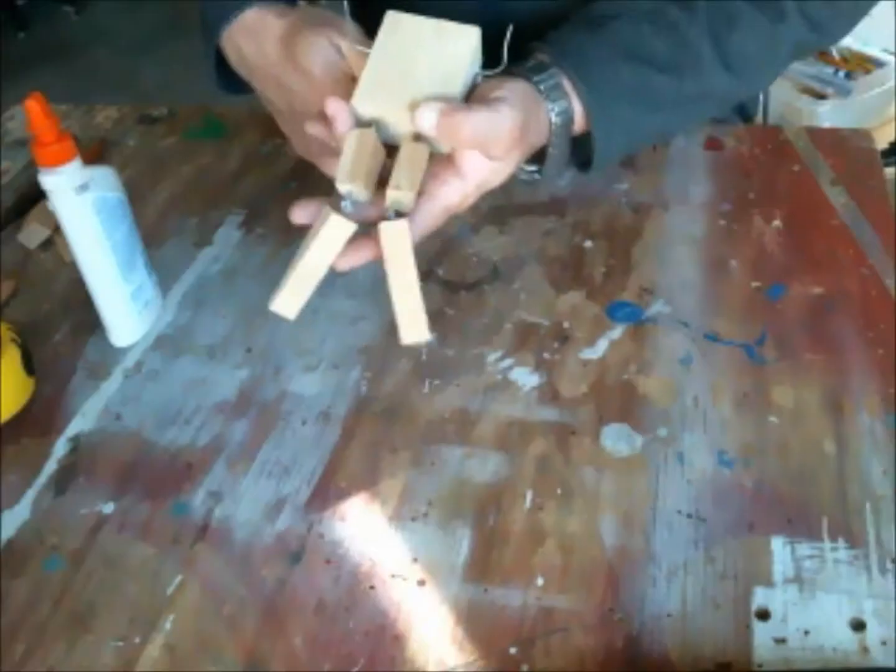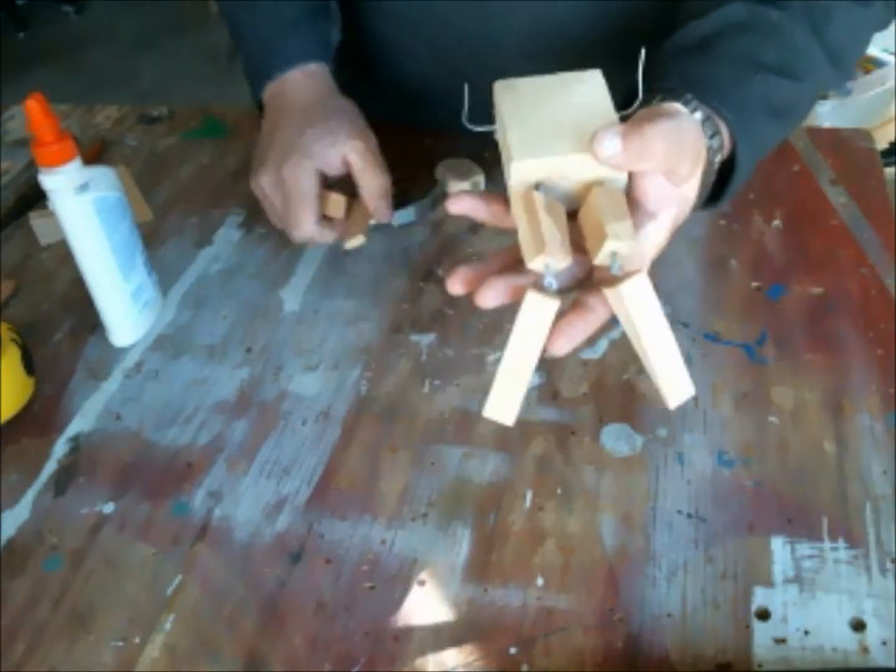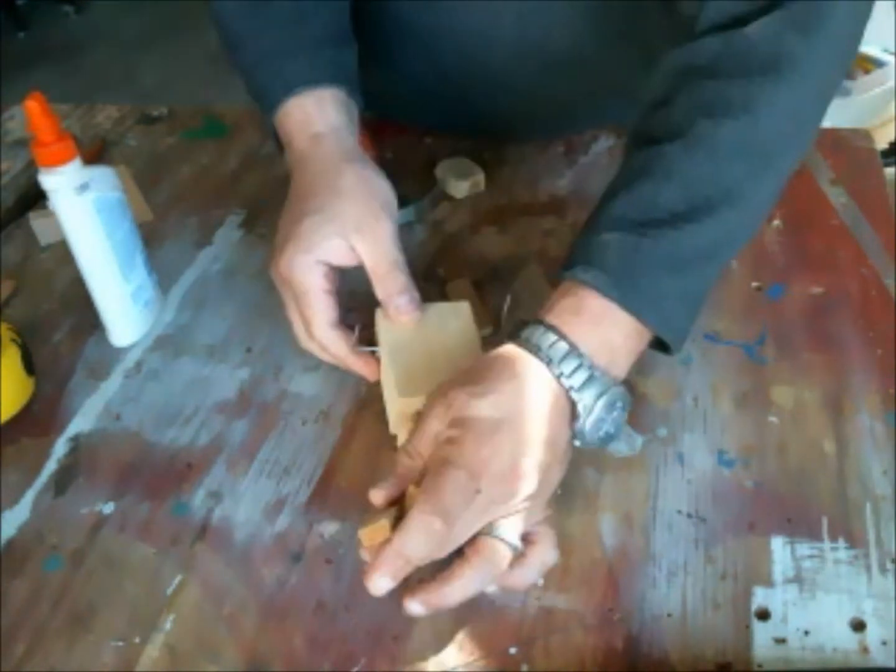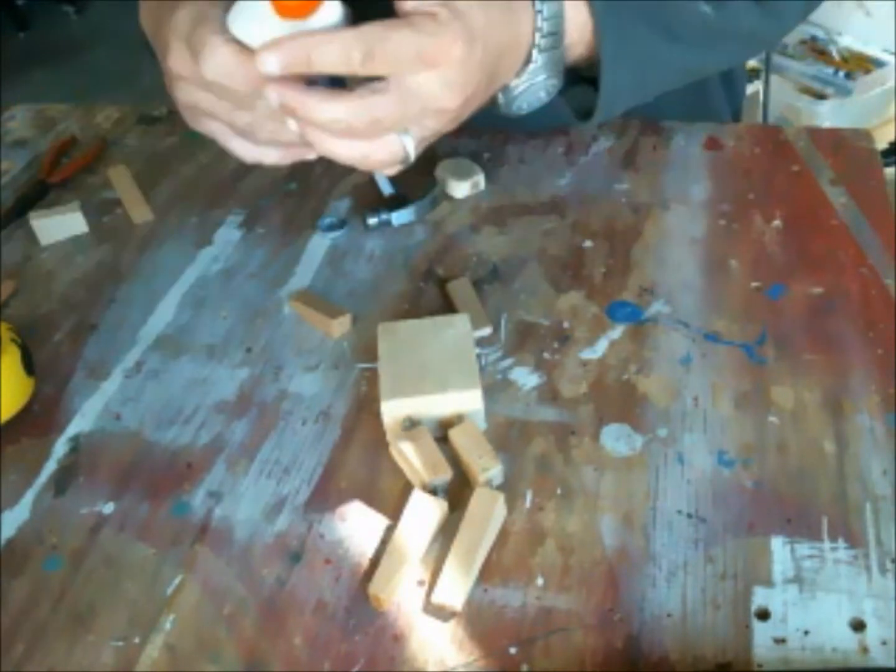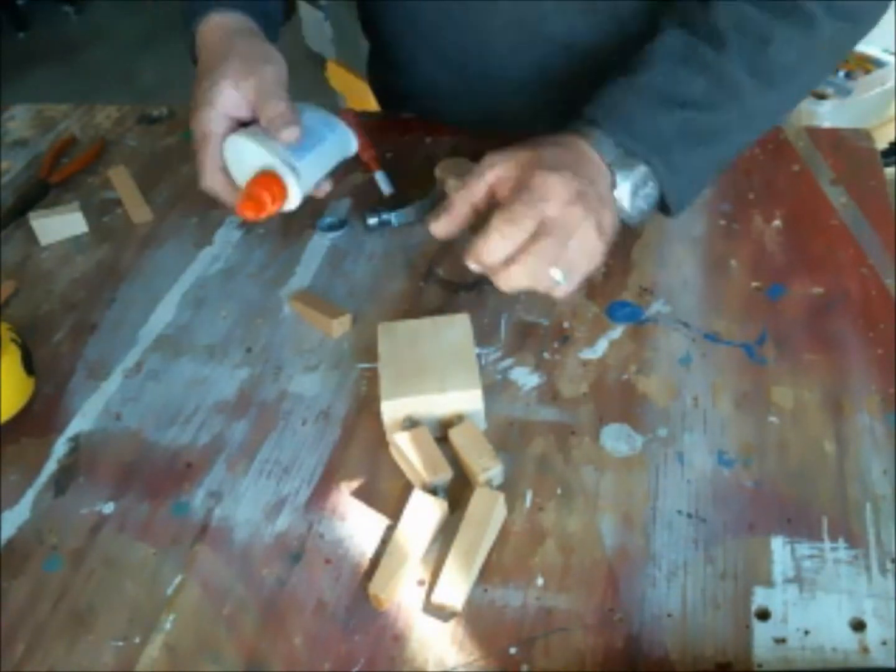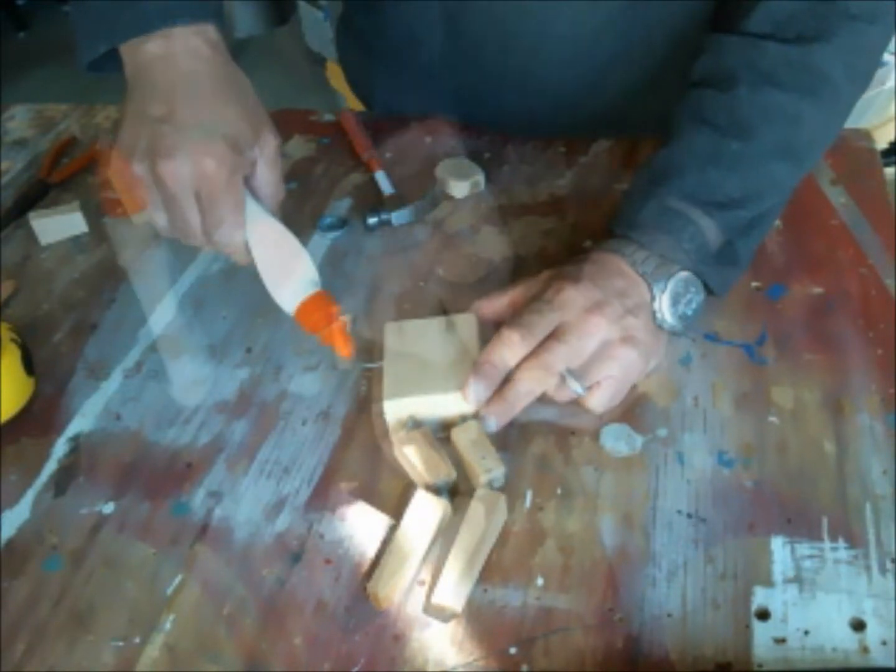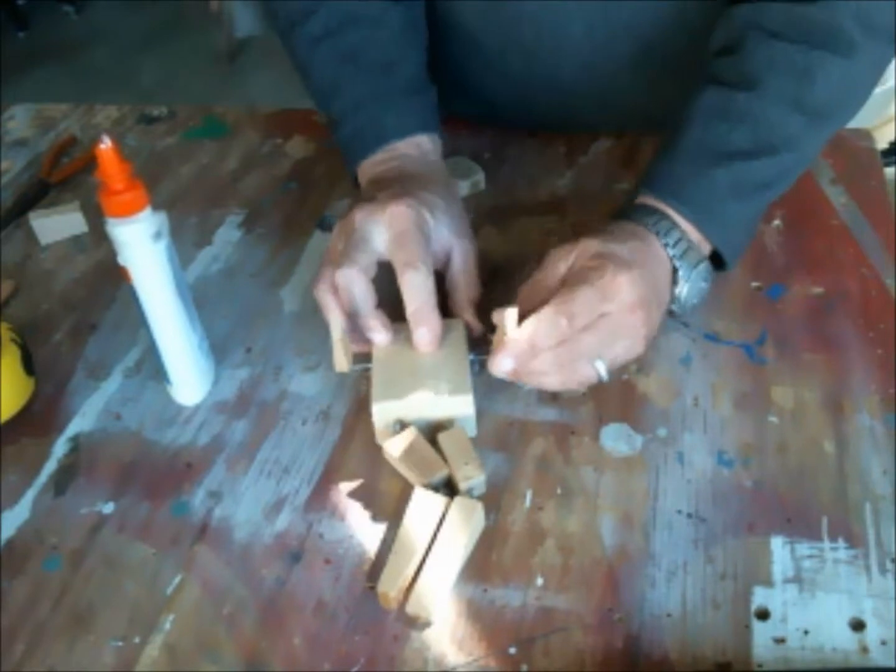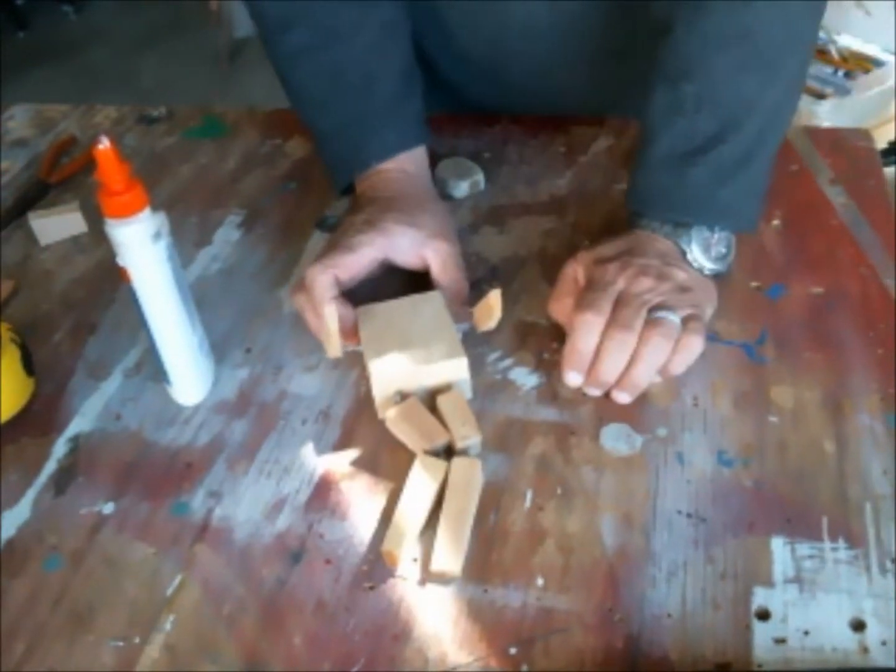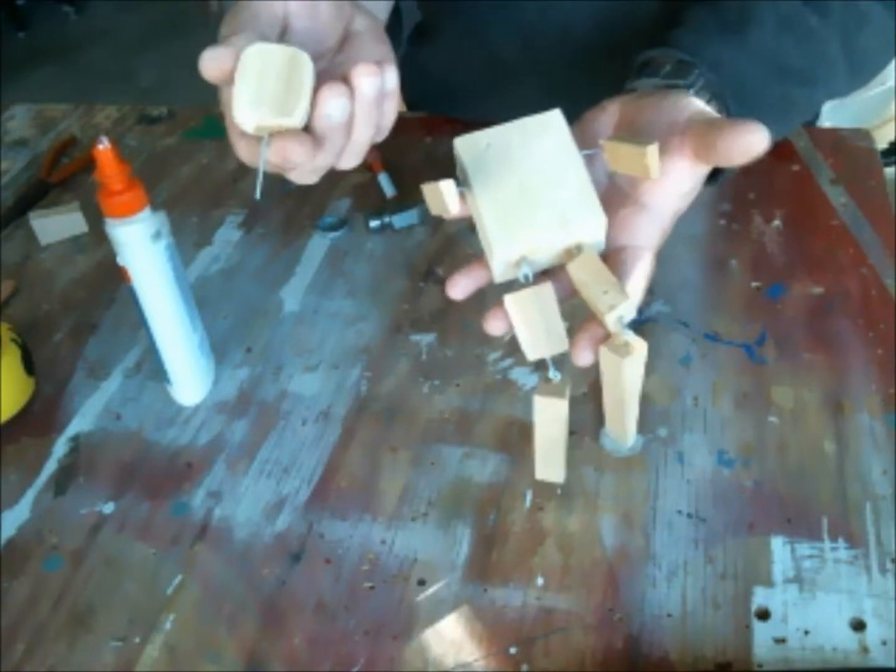Now, once you've got everything put together, what you're going to want to do is glue the wire into each of the holes. Once everything is spaced evenly and is moving properly, go ahead and get some wood glue. And you want to glue those wires into the holes that you drill. So the arm sockets, the lower legs, and the body sockets, all of the wire.